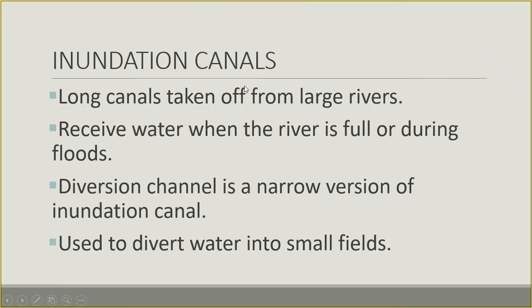Inundation canals are long canals taken off from large rivers. They receive water only when the river is full or flooding, meaning they are not full of water throughout the year as they are not connected to barrages or dams. A smaller version of an inundation canal is called a diversion channel, used to divert water into small fields for irrigation.